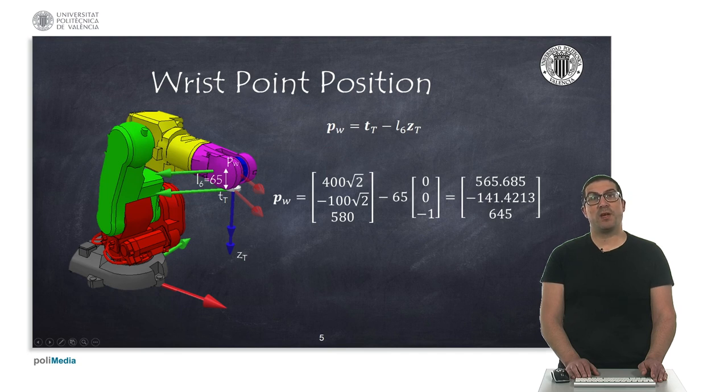Those values pt and zt can be obtained from the transformation matrix that we indicated at the beginning of the presentation. pt is indeed obtained from the fourth column, while zt is obtained from the third column of the corresponding transformation matrix. This actual vector is indeed the z axis of the rotation matrix.